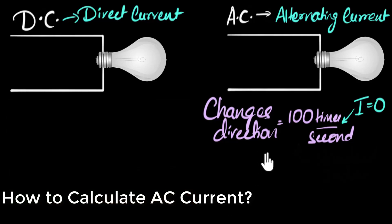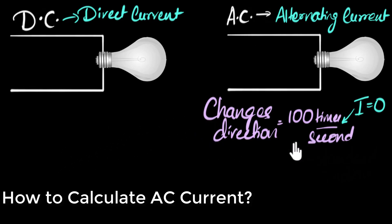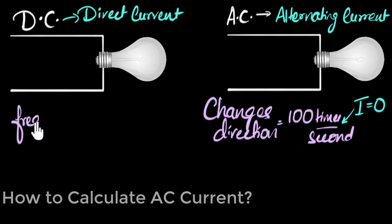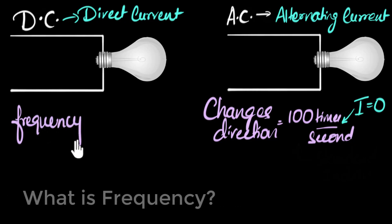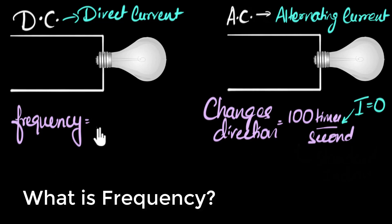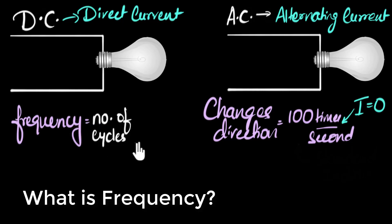This might bring more questions to your mind, like why do we choose 100 times a second, or why do we even use alternating current in the first place? Let me first talk about the standard way of representing how quickly the current changes its direction. The standard way is by using a number called frequency. What does frequency represent? Instead of talking about the number of times the current changes its direction, it talks about the number of cycles the current goes through per second — number of cycles per second.